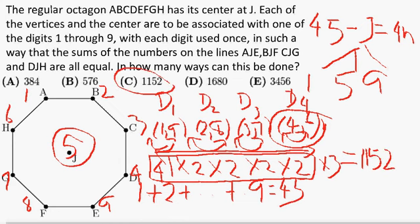To sum up: we stated the problem, simplified it by removing the center, and figured out how many arrangements are possible. Then we figured out how many selections of J we are allowed to make given the restrictions. We multiplied everything together and got the final answer.